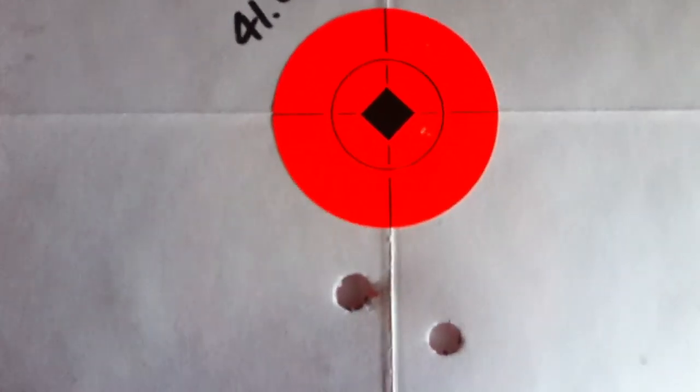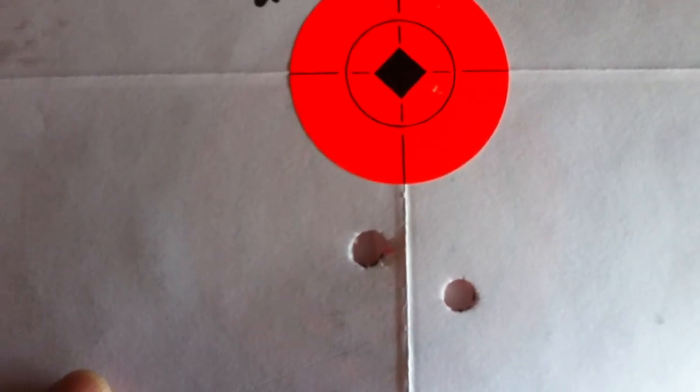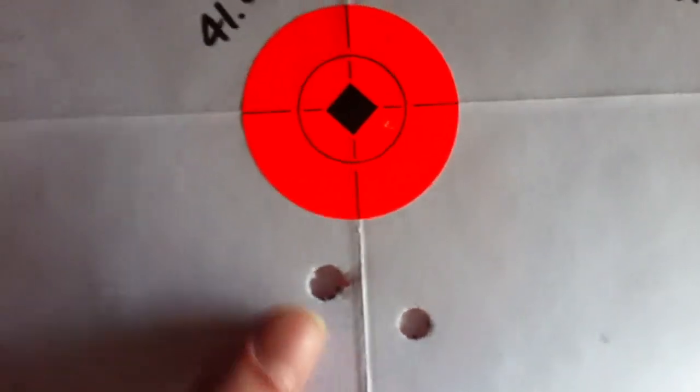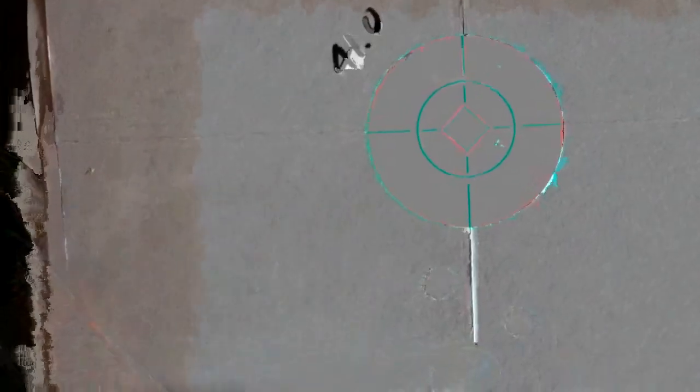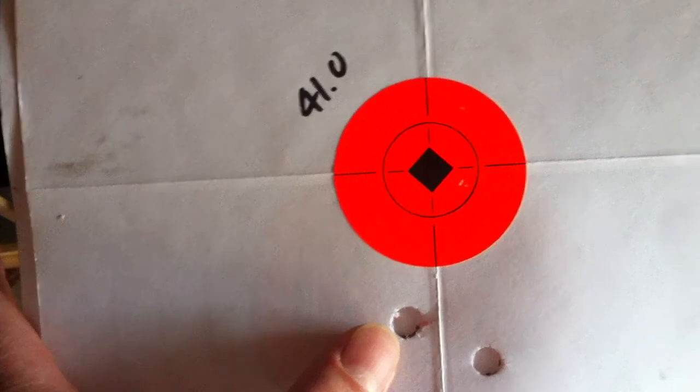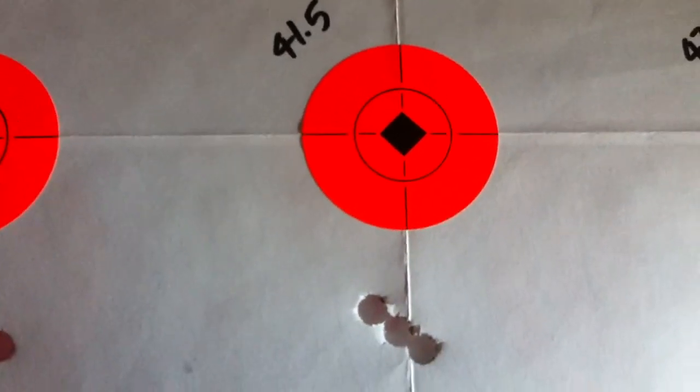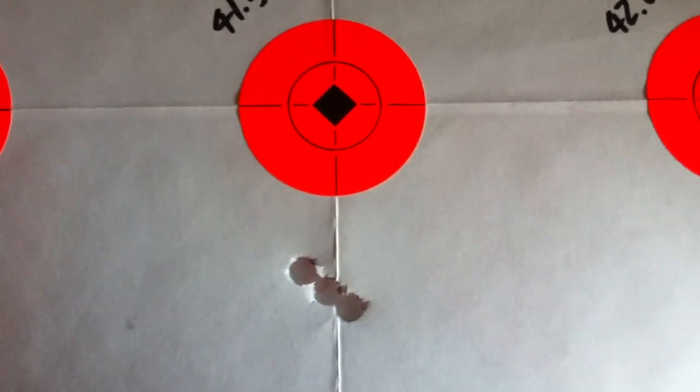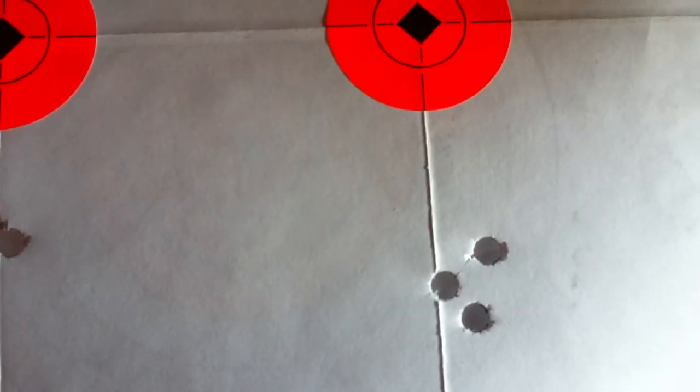This is 41 grain. You only see two holes, but that's a three shot group. Out of this shot right here to the right, I pulled. I felt that one because I flinched. And then this one, there's actually two rounds in that one hole. And here's a three shot group with 41.5 of benchmark. And here's 42 grains, three shot group.